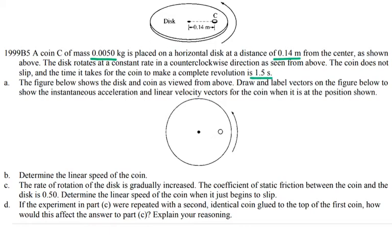The figure below shows the disk and coin as viewed from above. Draw and label vectors on the figure below to show instantaneous acceleration and linear velocity vectors for the coin when it is at the position shown.